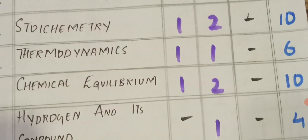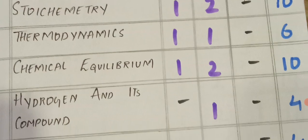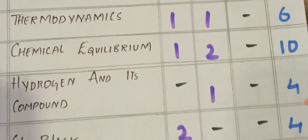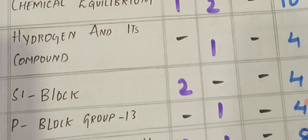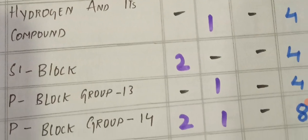Chemical equilibrium: 1 VSAQ and 2 SAQs. Hydrogen and its compounds: 1 SAQ, total 4 marks. X block elements: 2 VSAQs, total 4 marks.